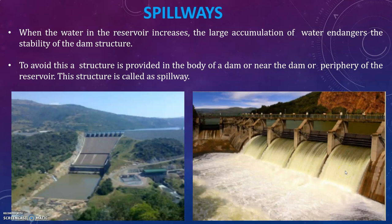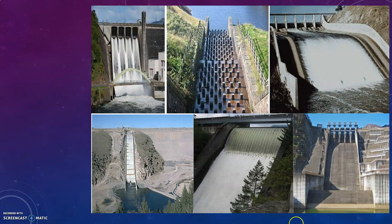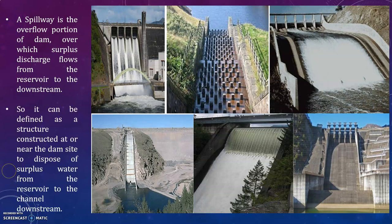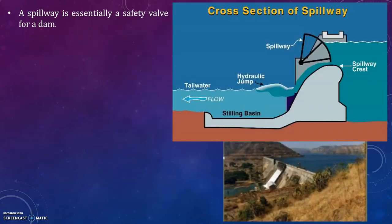The spillway is mainly provided in the body of the dam, or near the dam, or at the periphery of the dam, to avoid the accumulation of water. A spillway is the overflow portion of a dam over which surplus discharge flows from the reservoir to the downstream. It can be defined as a structure constructed at or near the dam site to dispose of surplus water from the reservoir to the channel downstream. The spillway is essentially a safety valve for a dam.